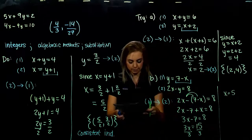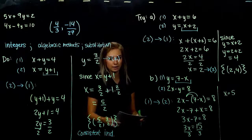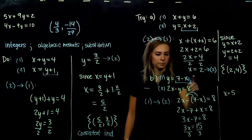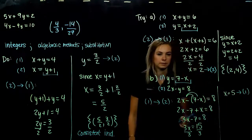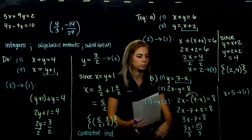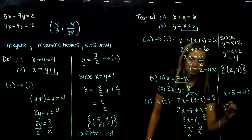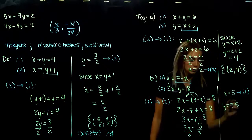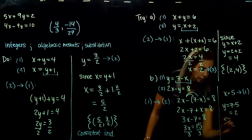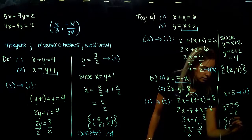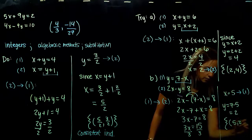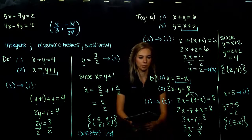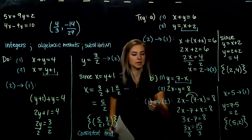That's only half of it — we still need the y value. The easiest equation to substitute back into is equation 1, since y is already isolated. Substituting x equals 5 back in: y equals 7 minus 5 equals 2. So we have one solution to this system. x comes first, y comes second: the point is (5, 2). Both systems are consistent and independent since we have solutions and aren't dealing with the same lines.